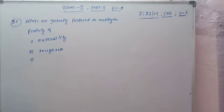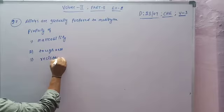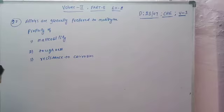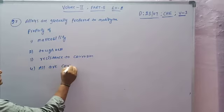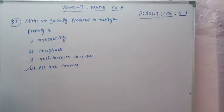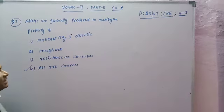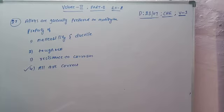The third one is resistance to corrosion. All are correct because alloys have malleability, ductility, toughness, hardness, and resistance to corrosion. Resistance to corrosion means the metal does not split into separate parts.